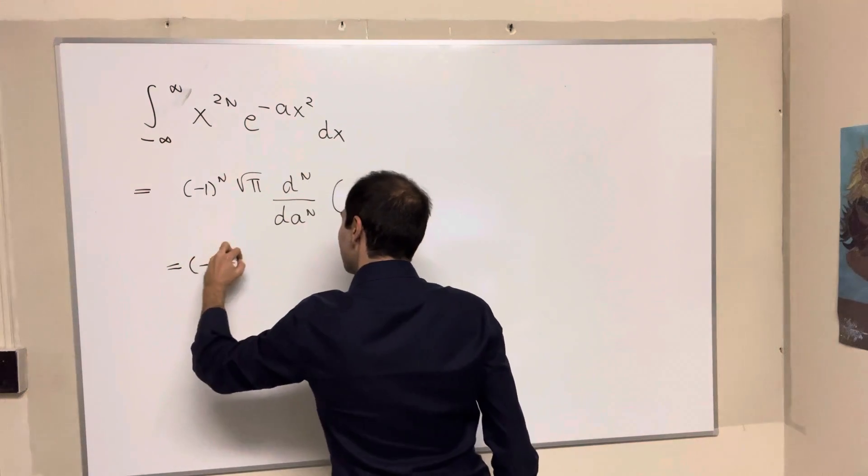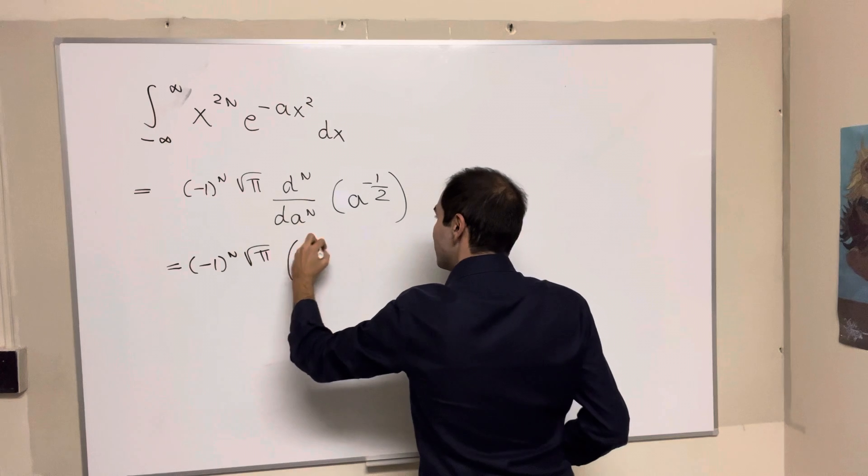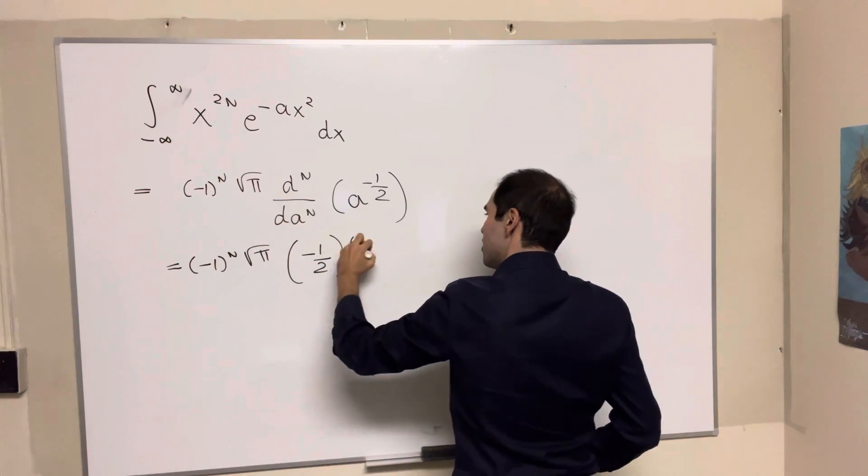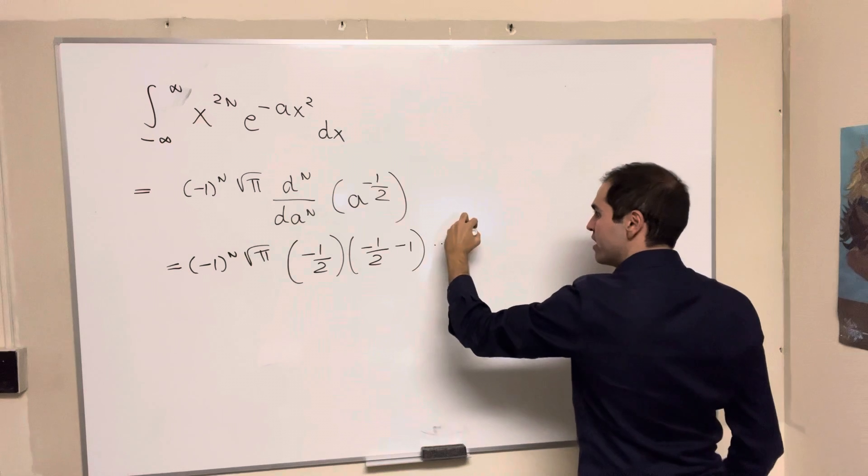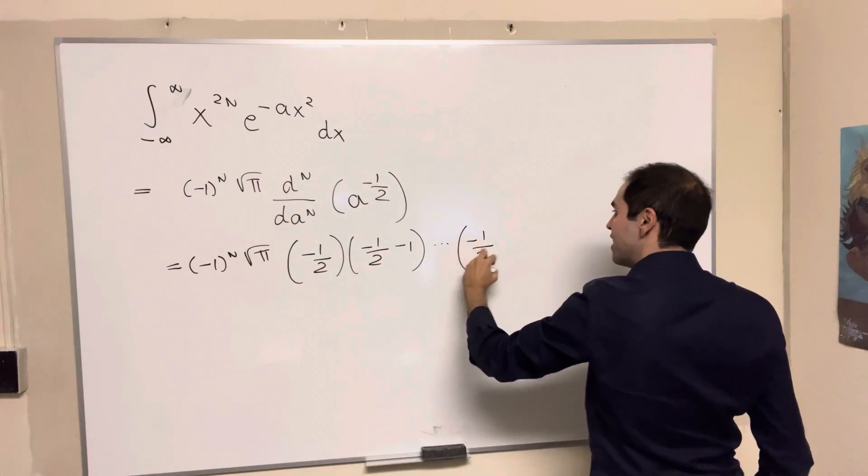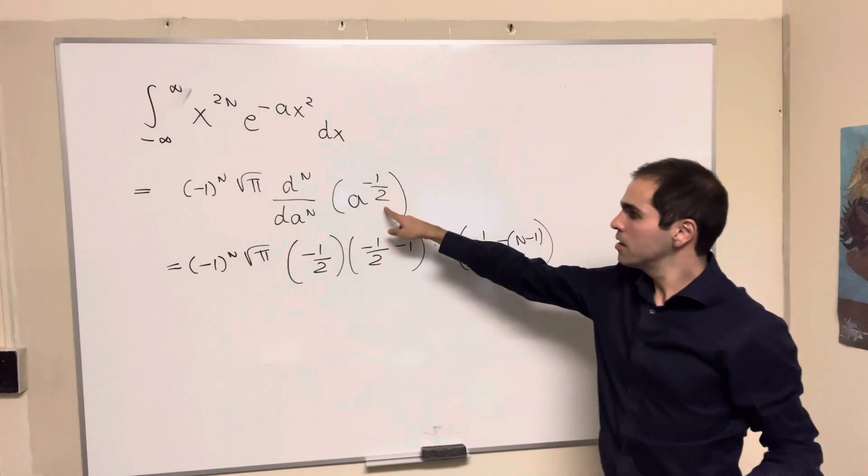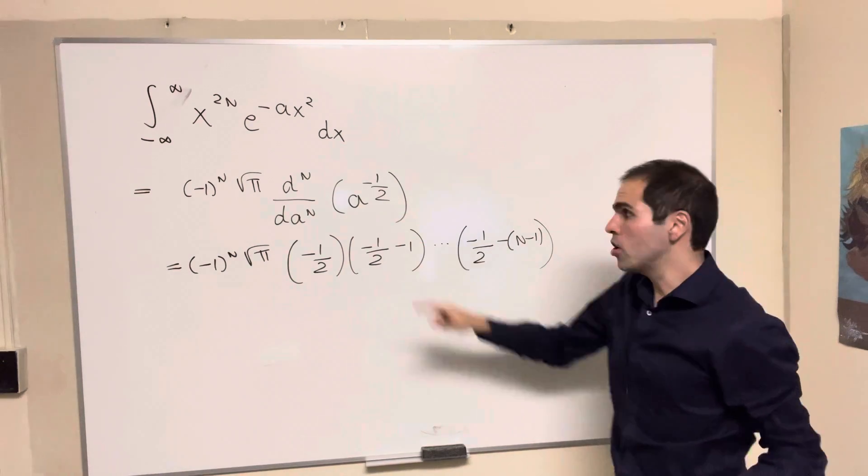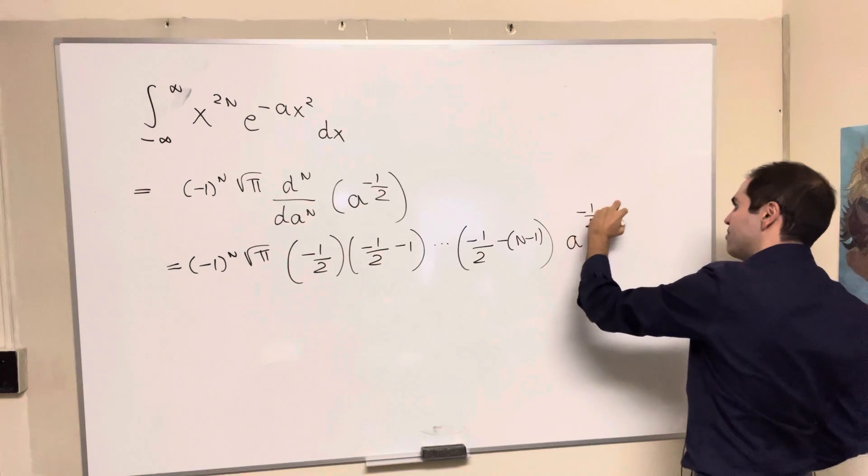And then just do this n times. So minus 1 to the n, square root of pi, and then minus 1 half, minus 1 half, minus 1, up to, again, we do this n times, so minus 1 half, minus n minus 1. And then n powers come out of that, a to the minus 1 half, minus n.